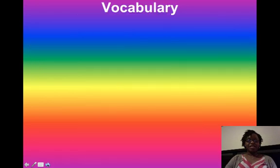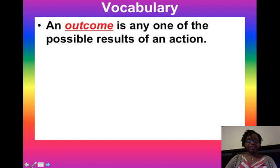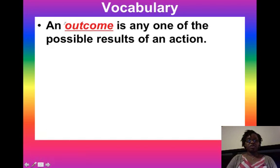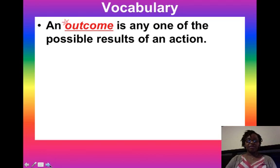Before we get started, there are some key vocabulary words that you will need to define. The very first one that you'll need to make sure that you get down in your notes is outcome. Outcome is any one of the possible results of an action. That action may be flipping a coin and you could get heads or tails. The action could be rolling a die — you could get a one, a four, or a six.